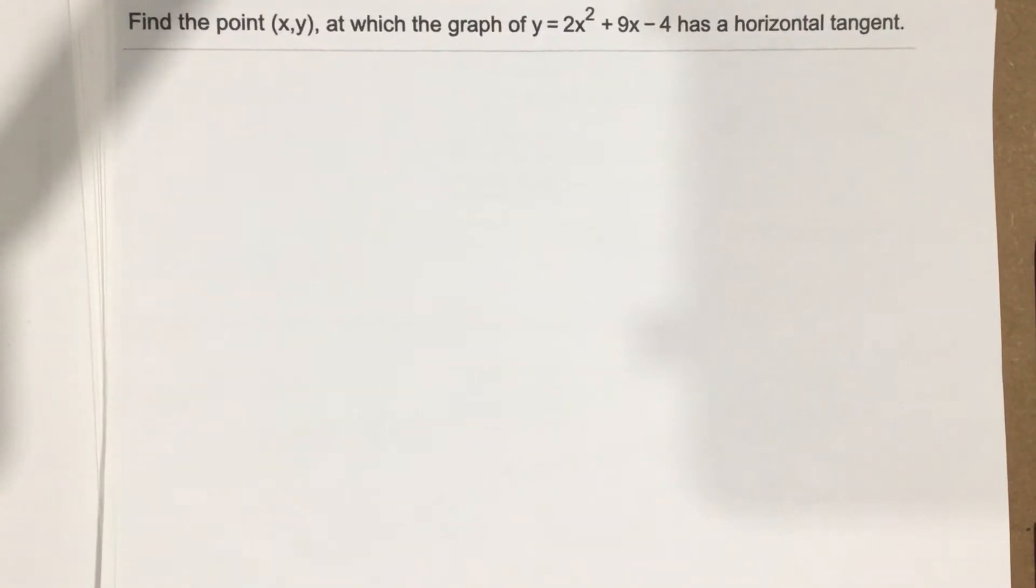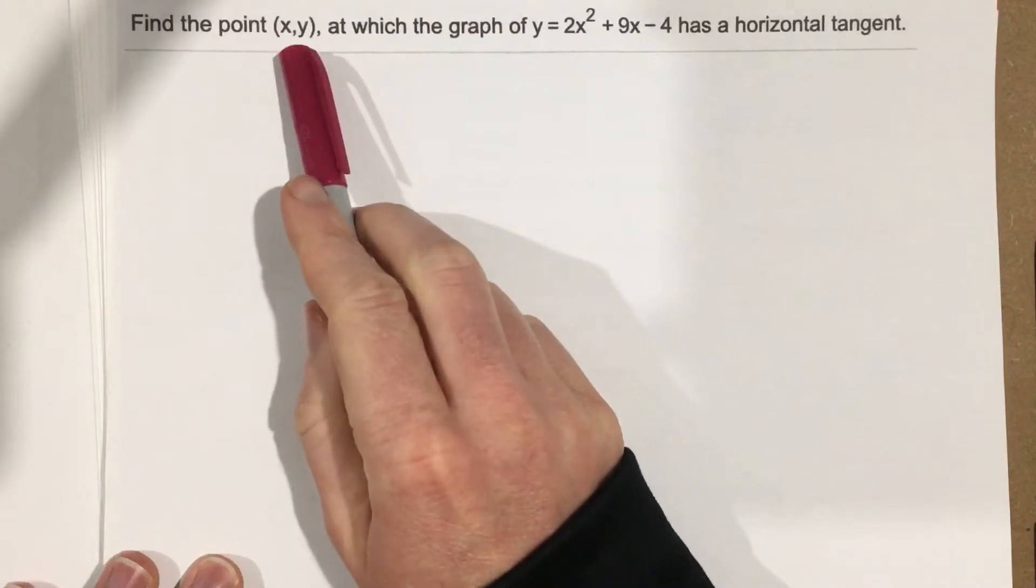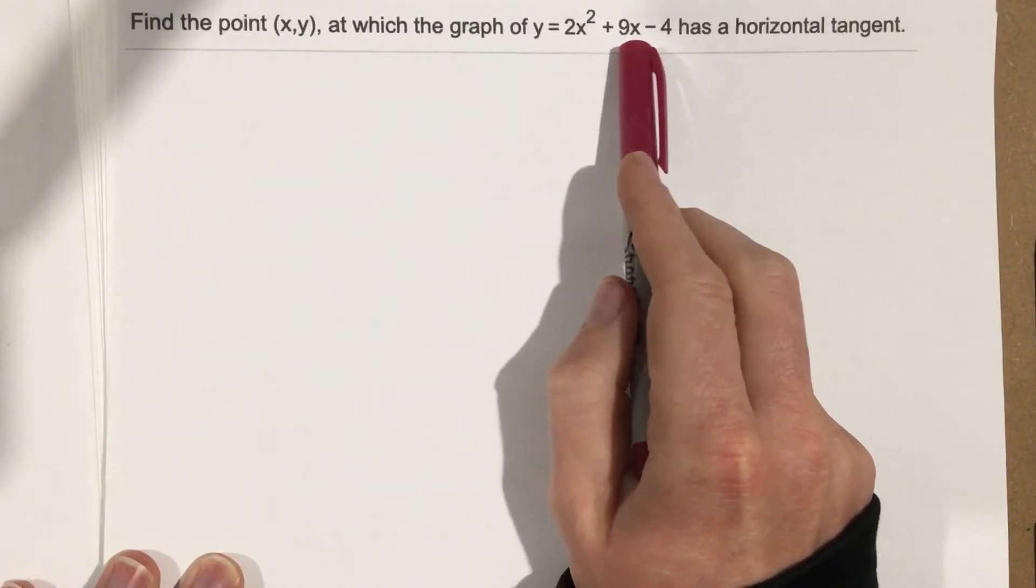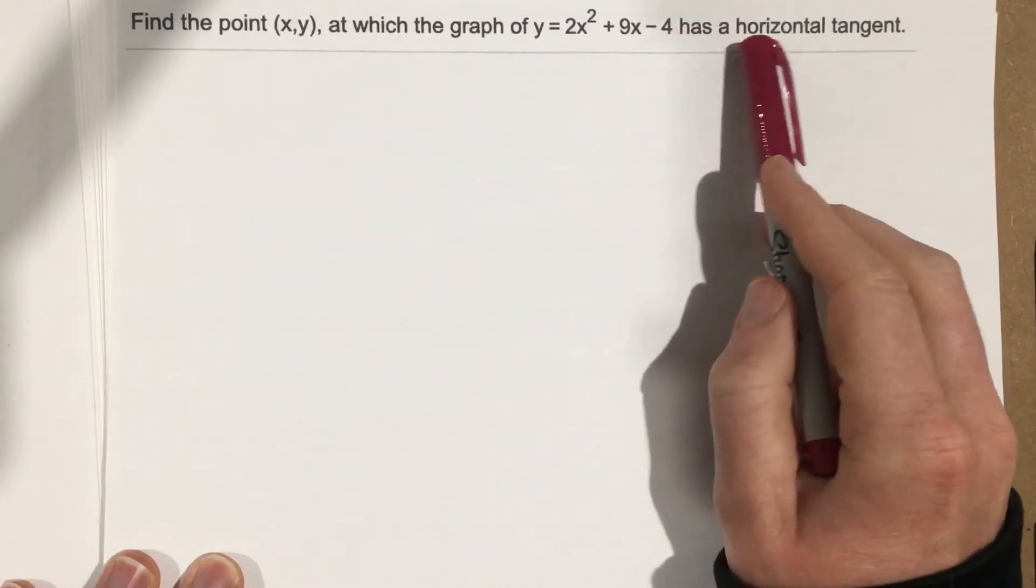This is problem number 7 from section 3.1. In this problem they say find the point (x, y) at which the graph of y equals 2x squared plus 9x minus 4 has a horizontal tangent.